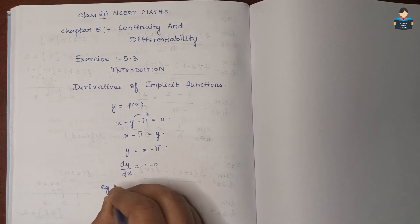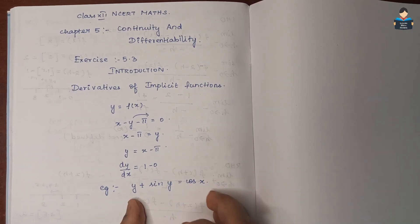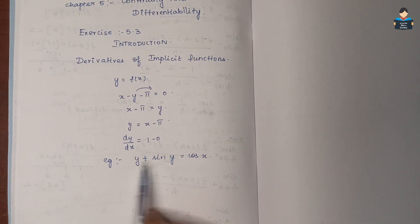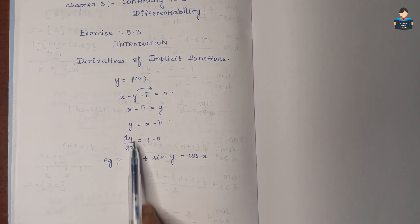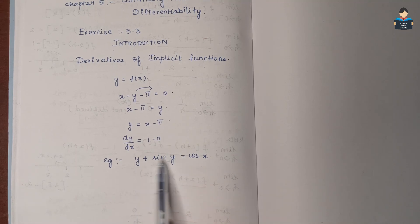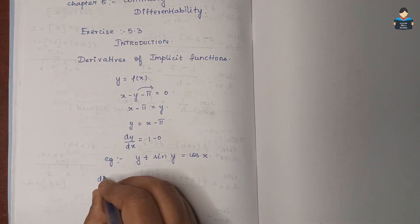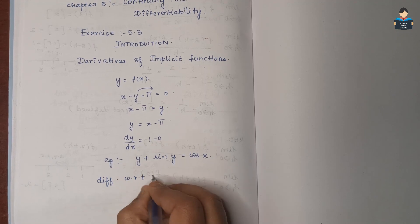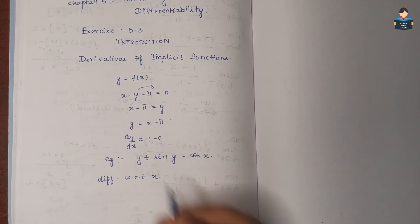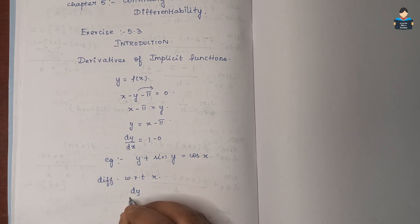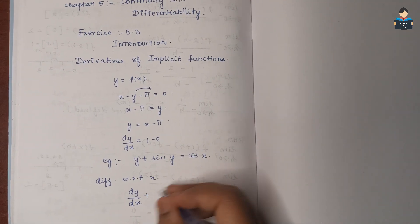For example, consider y + sin y = cos x. Here both y terms and x terms are present together. We cannot separate y easily, so we directly differentiate with respect to x. Differentiating: dy/dx + cos y · (dy/dx) = -sin x.